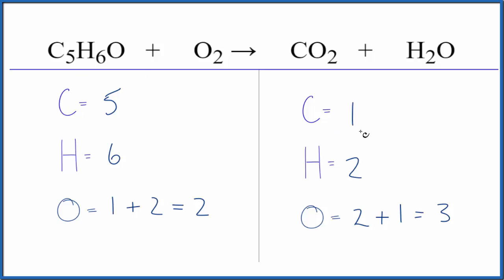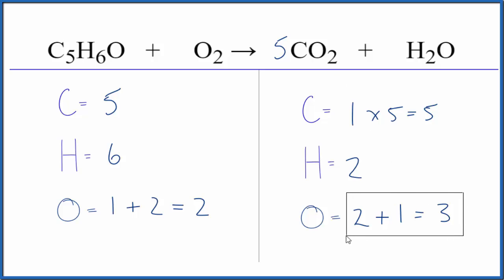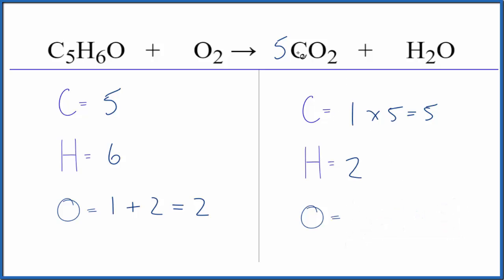Let's just start with the carbon. Put a five in front of the CO2 — one times five equals five, so they're balanced. But the five goes to everything here, so we need to update the oxygen atoms. We have two times five, that's ten, plus the one oxygen there in the water, so we have eleven.